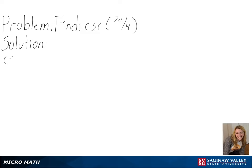Our problem is to find cosecant of 7π over 4. To solve this, we will be using a unit circle.